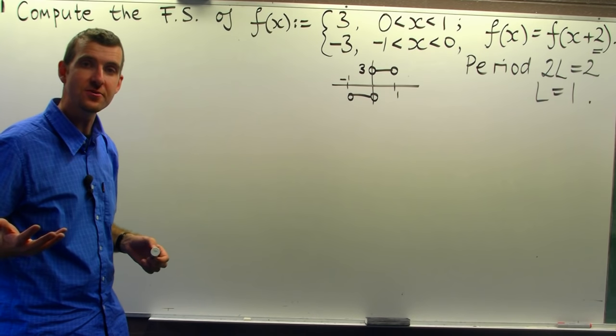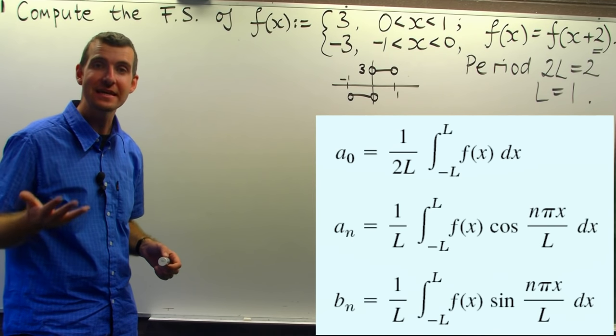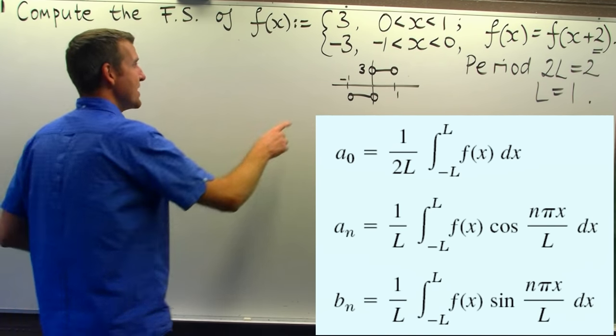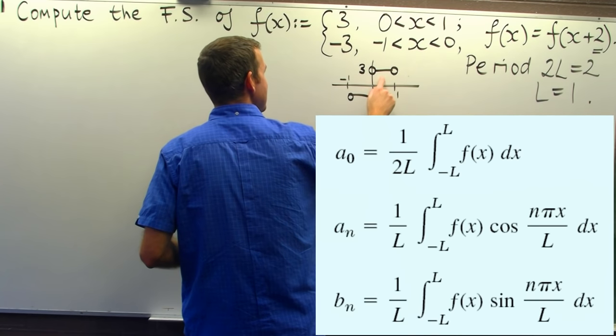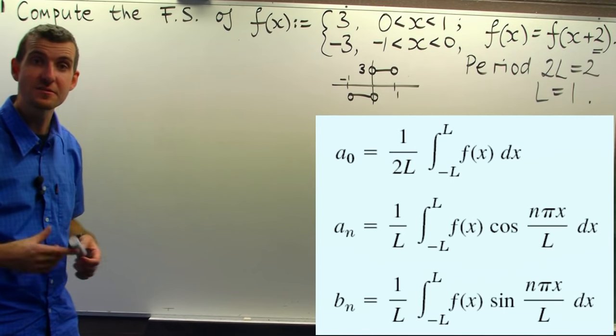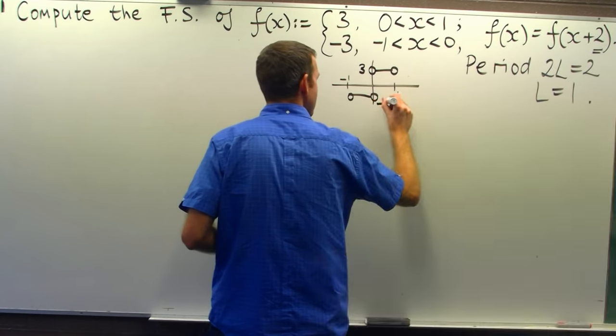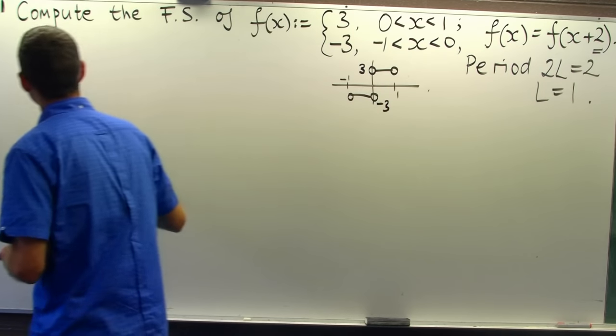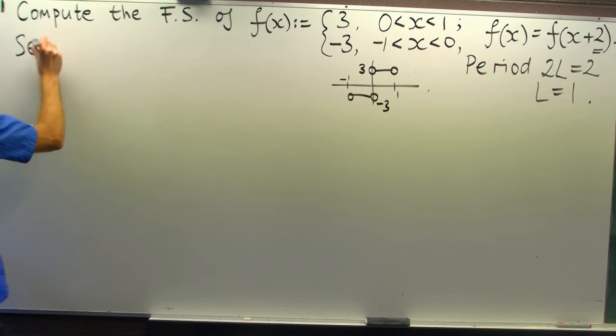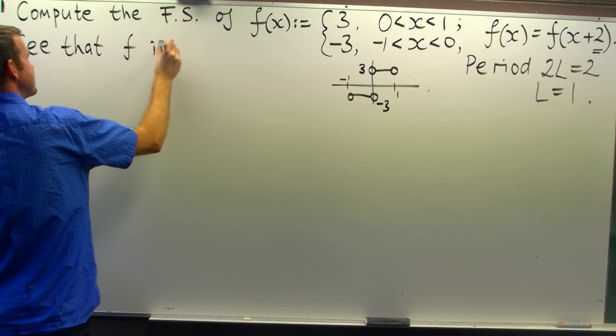Well, to compute the Fourier coefficients - the a noughts, the a n's, and the b n's - we rely on integration. And we know that if we integrate an odd function over the interval minus 1 to 1, things are going to simplify. So it's very important. The important observation is f is odd.